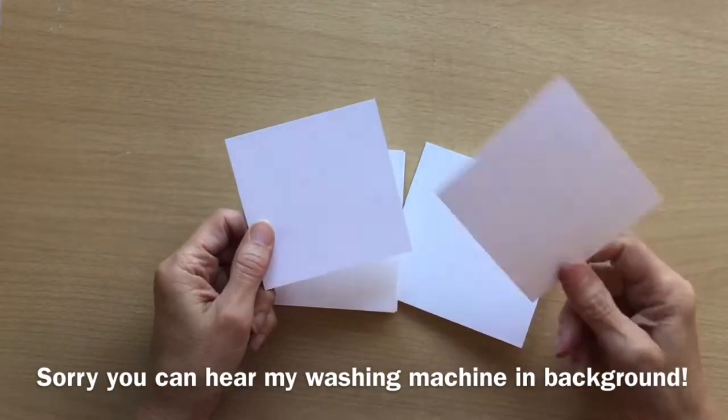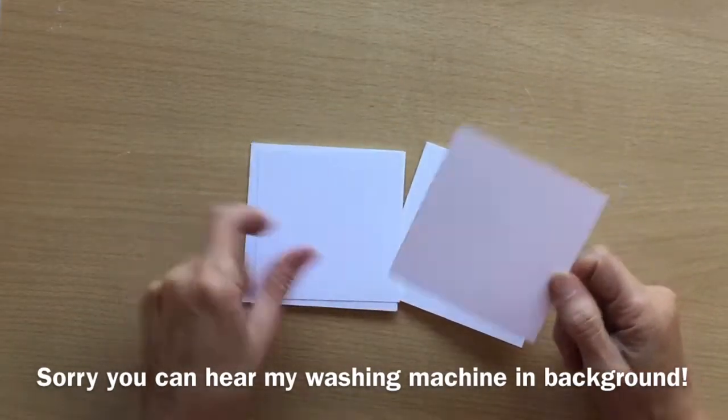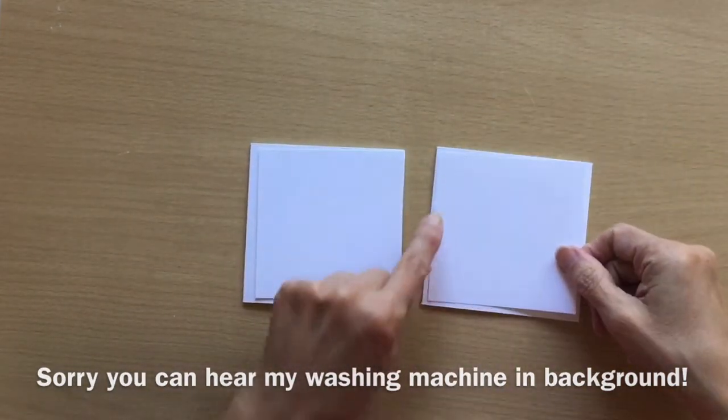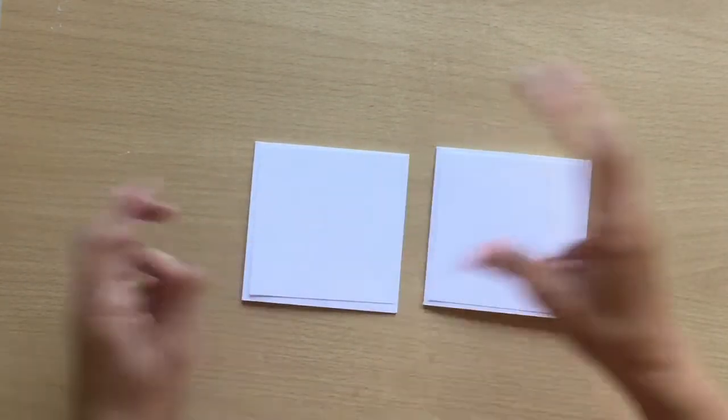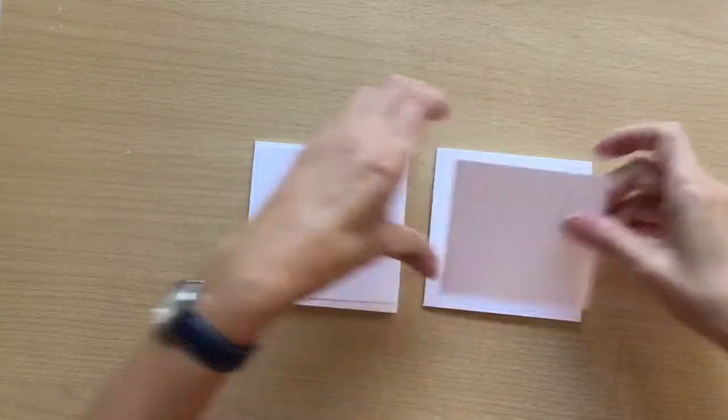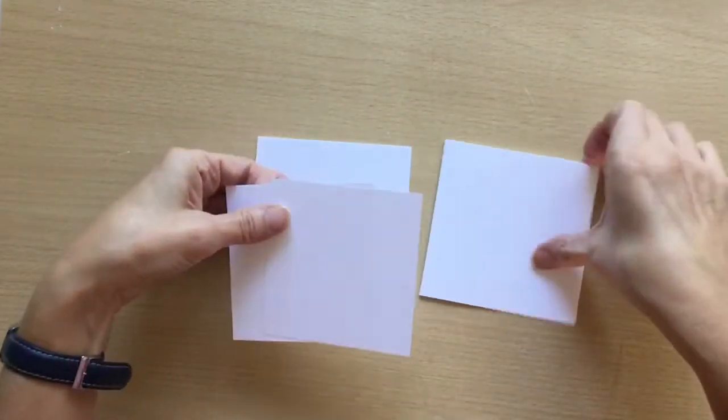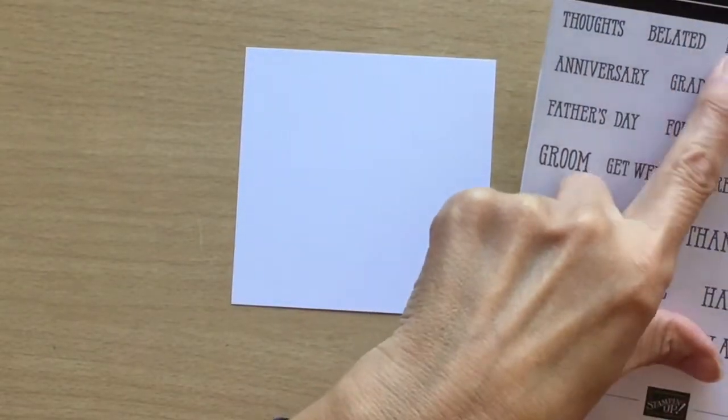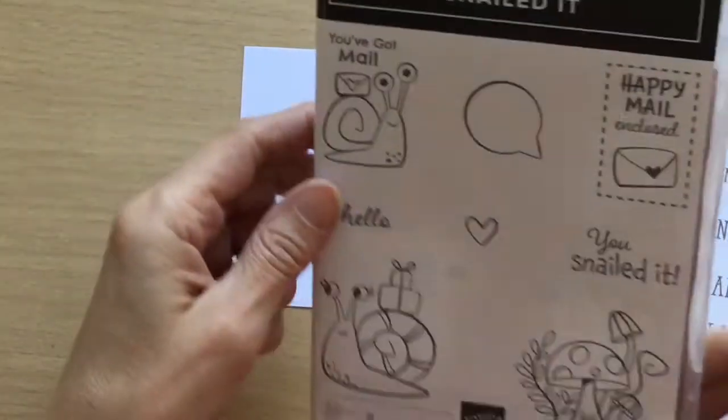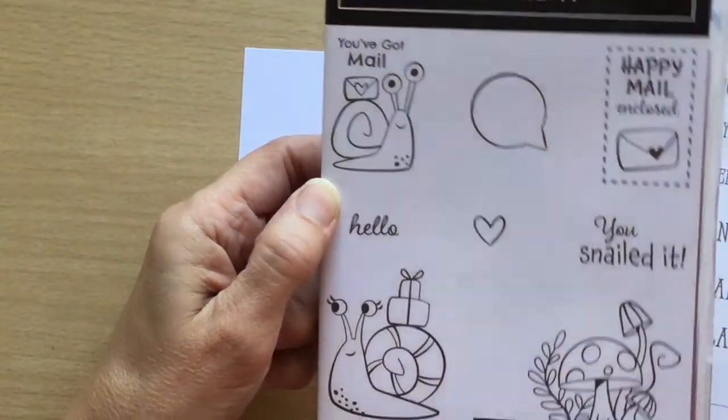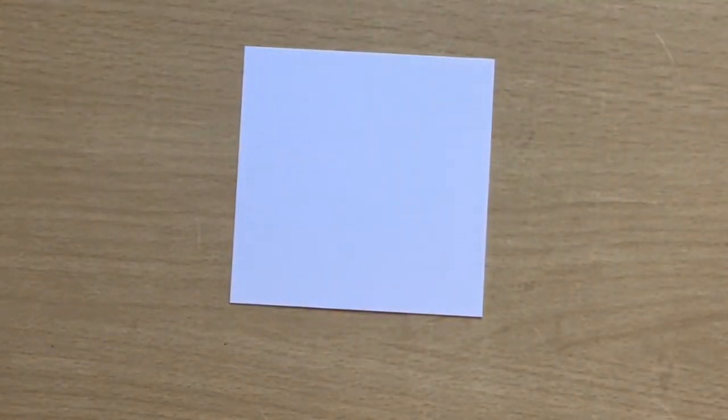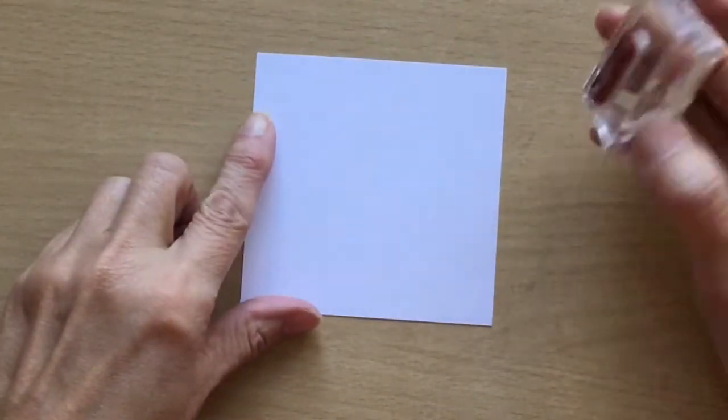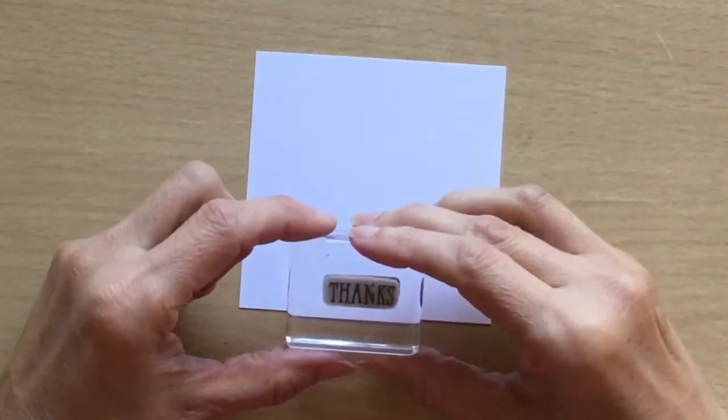And I've also cut out some Whisper White at three and three quarters by three and three quarters, so a square, and it's going to go on the front of our cards. Let's do a tiny bit more stamping. I'm going to be using a sentiment from Well Said. There are sentiments on the Snailed It but I actually want a thank you card on one of mine, so I'm just going to be taking thanks from here and stamp this at the bottom of one of the layers.